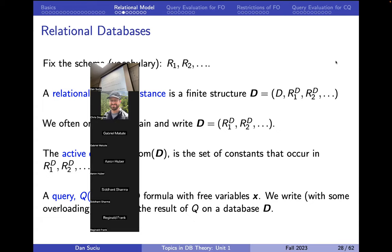Let's start the relational model — a quick recap. We start with a vocabulary of relations, which is your schema of the database. A database instance is just a structure where each relation name becomes a complete finite table. We usually mention the domain, which can be infinite or finite, but we often drop it and assume it consists of the active domain — the set of all constants appearing in all the tables. The query is a first-order formula with free variables, returning all tuples of those variables that satisfy the formula.